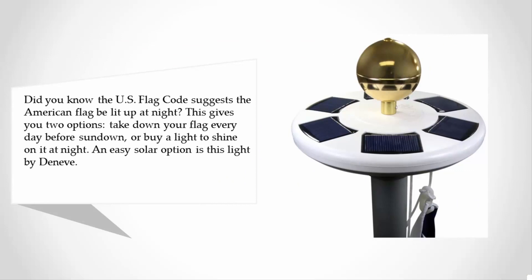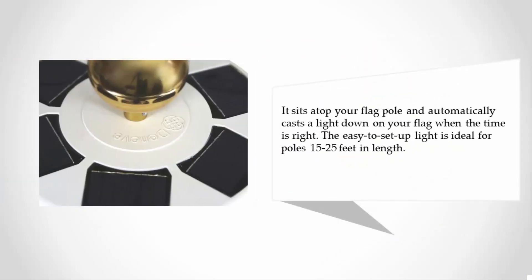An easy solar option is this light by Deniv. It sits atop your flag pole and automatically casts a light down on your flag when the time is right. The easy to set up light is ideal for poles 15 to 25 feet in length.